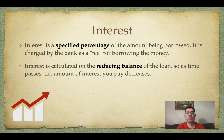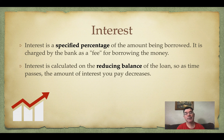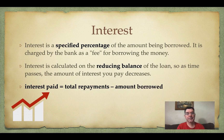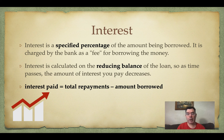The interest is calculated on the reducing balance of the loan. As time goes by, you're paying more of the loan off, which means the interest calculated as a percentage ends up being less because you actually owe less. So the total amount of interest you pay is the total amount repaid minus the amount you originally borrowed.